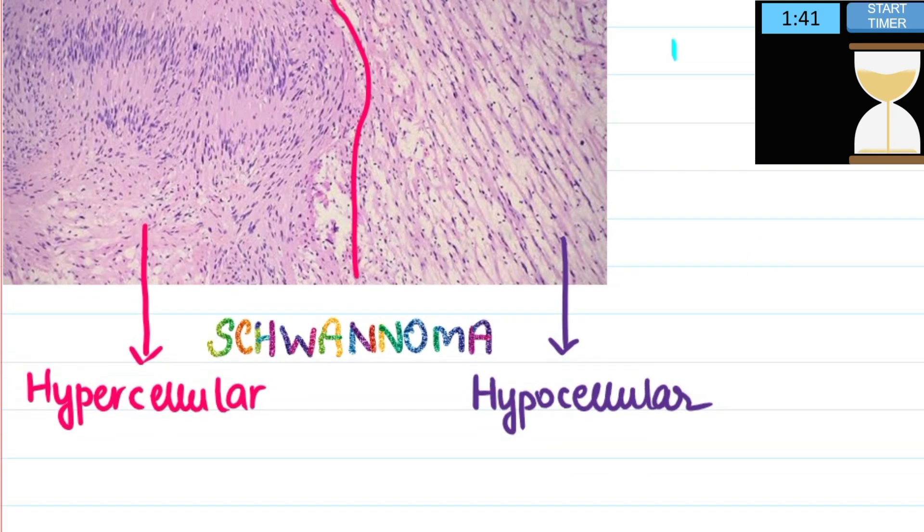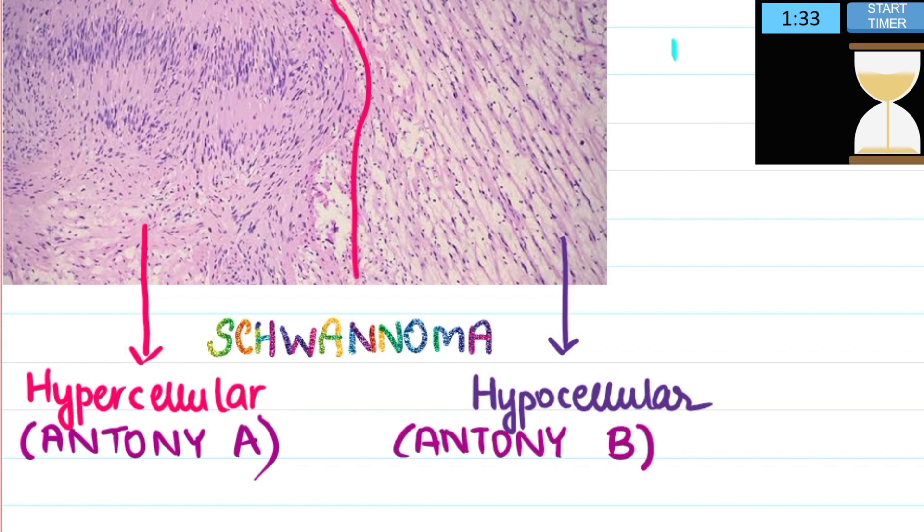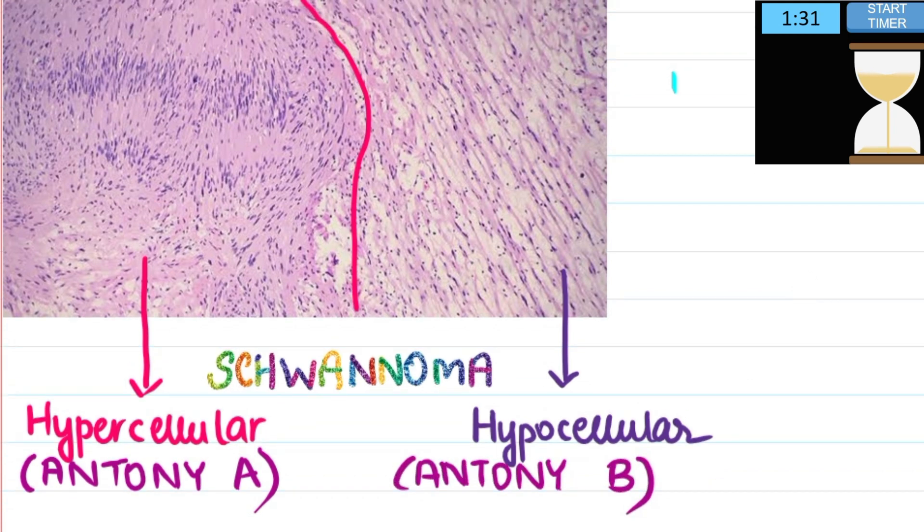The hypercellular area is also known as the Antony A area and the hypocellular area is also known as the Antony B area. In the hypercellular or the Antony A area, there is a structure known as the Verocay body. Please note in the hypercellular area.